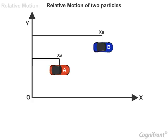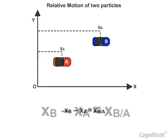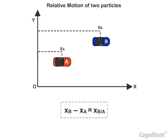The difference, XB minus XA defines the relative position coordinates of B with respect to A. It is denoted like this.